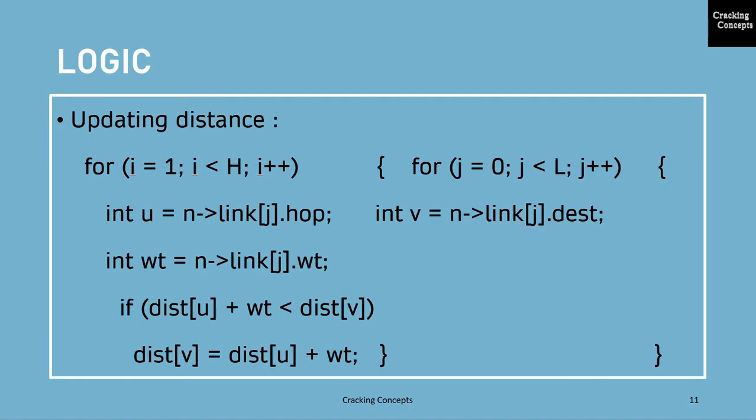So what it does is it is checking if that distance which is already stored is greater than the value of distance from this source and this weight added together. If it is so, that is this value will be lesser, then the distance of v, that is the distance to the destination, is modified because we have found a shorter path than the existing distance. So this is repeated until all the hops and links are traversed.